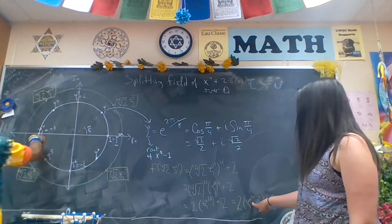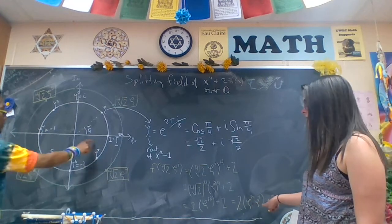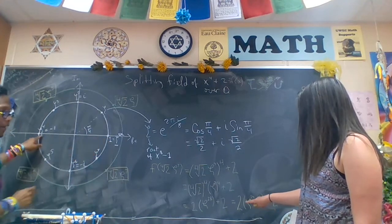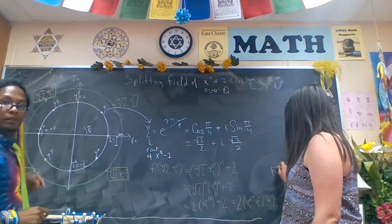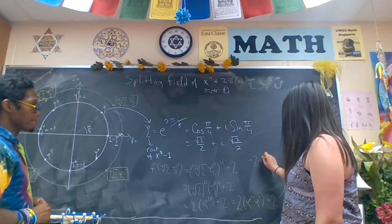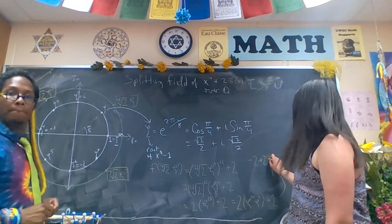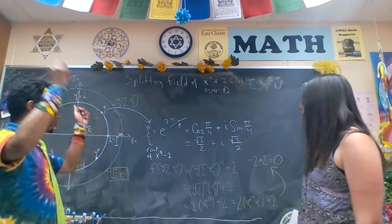And zeta to the 24th is 1. And zeta to the 4th is negative 1. So, that's 2 times negative 1, which is negative 2 plus 2 equals 0. So, it's a root.